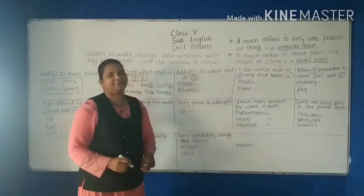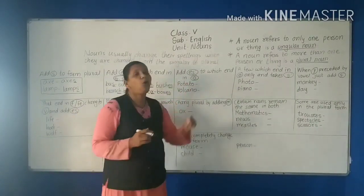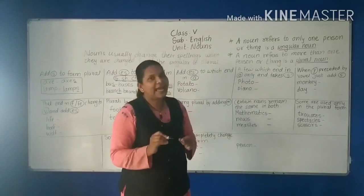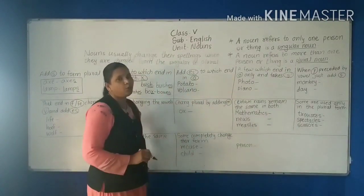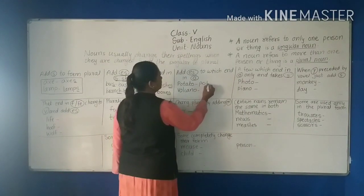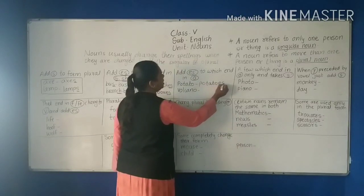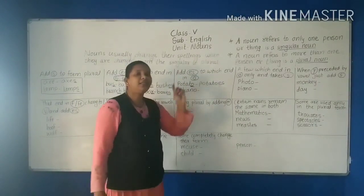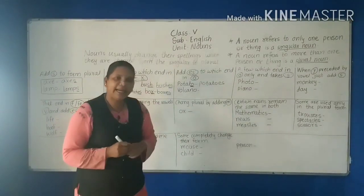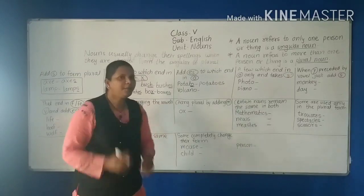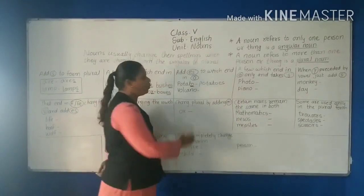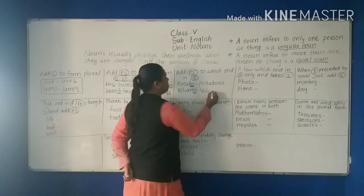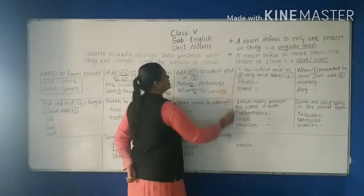Add 'es' to nouns ending in 'o'. The noun which ends with 'o' — just add 'es'. For example, 'potato' ends with 'o', so we add 'es' to get 'potatoes'. Similarly, 'volcano' ends with 'o', so we add 'es' to get 'volcanoes'.